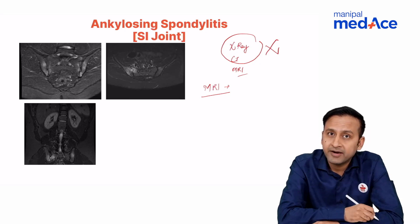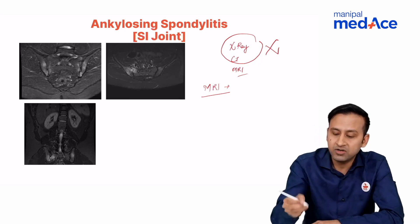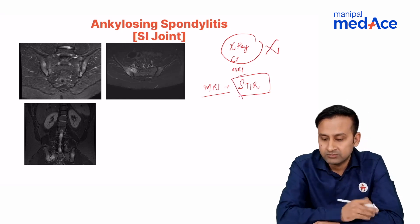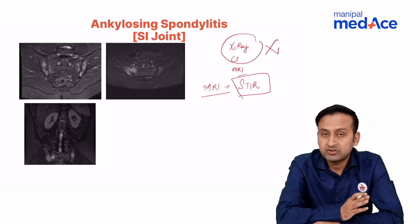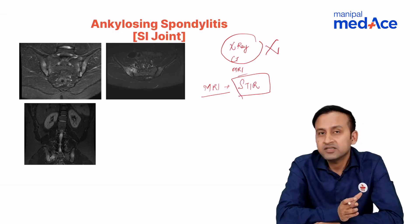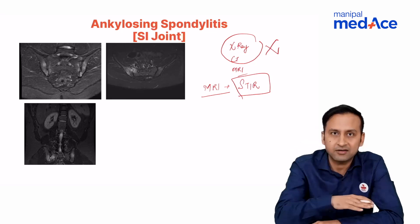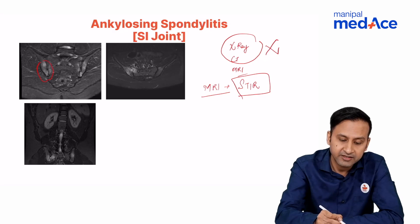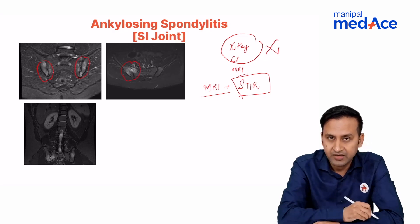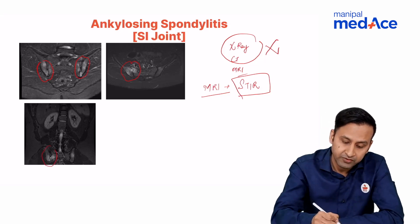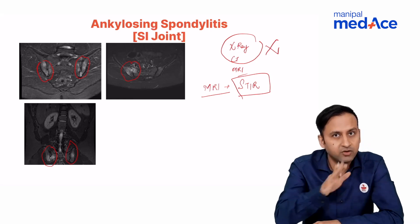On STIR MRI, you can see the SI joint with marrow edema appearing as a bright or hyperintense signal on both the sacral and iliac articular surfaces. The same finding can be seen on the coronal image. Keep a pictographic memory of this appearance.